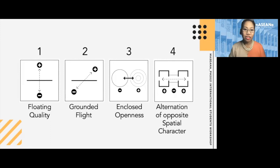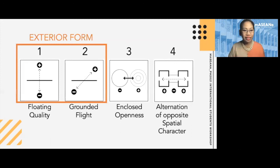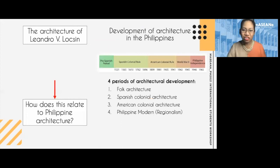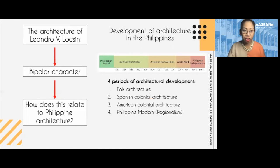I was able to derive four characteristics of Luxin's work that embody bipolarity: the floating quality, grounded flight, enclosed openness, and the alternation of opposite spatial character. Floating quality and grounded flight are observations on the exterior form, whereas enclosed openness and alternation of opposite spatial character are more of interior observations. I then tried to answer whether Luxin's architecture was truly Filipino, correlating building data to historical, archival, and sociocultural research.